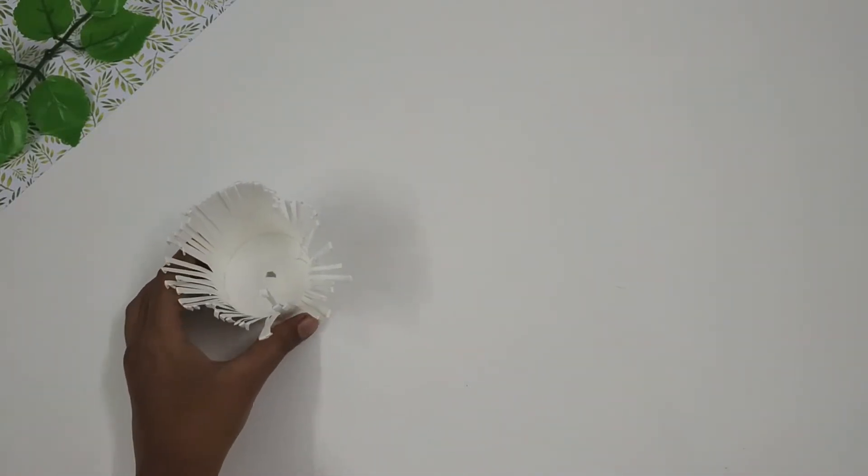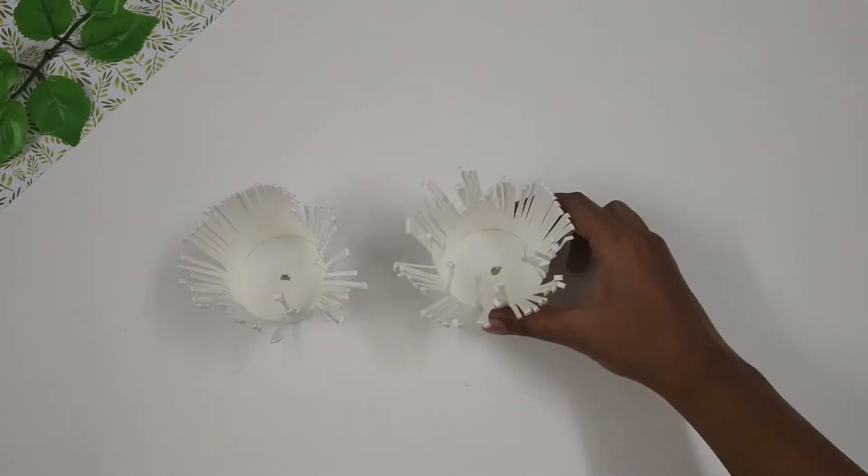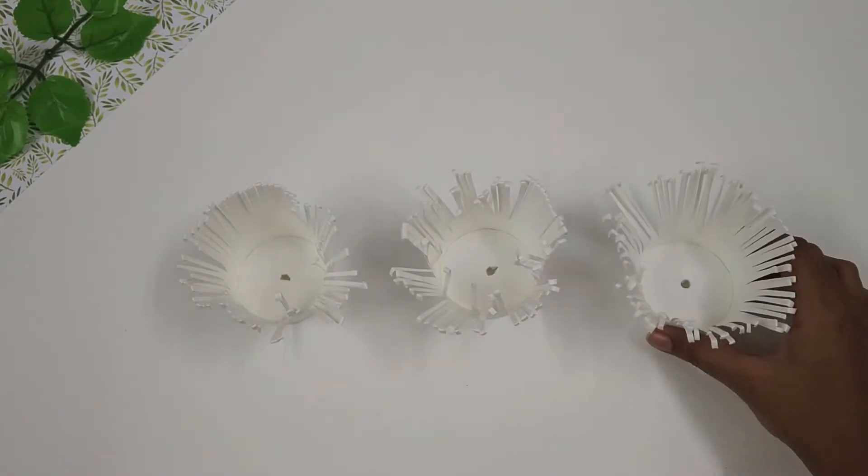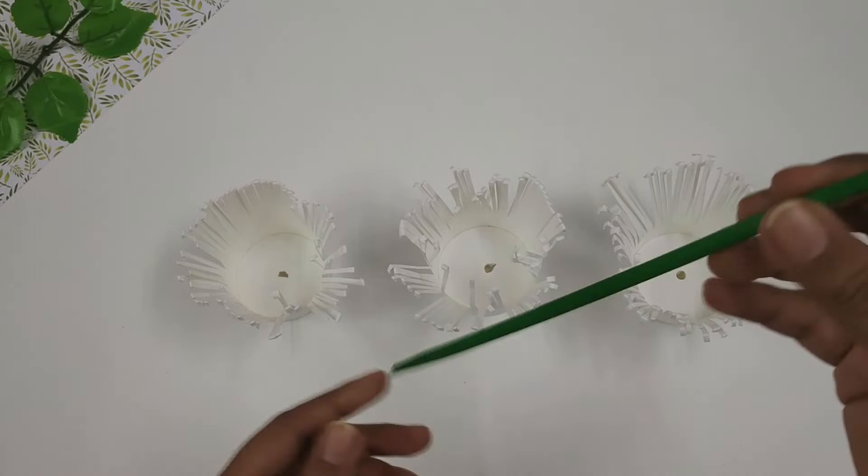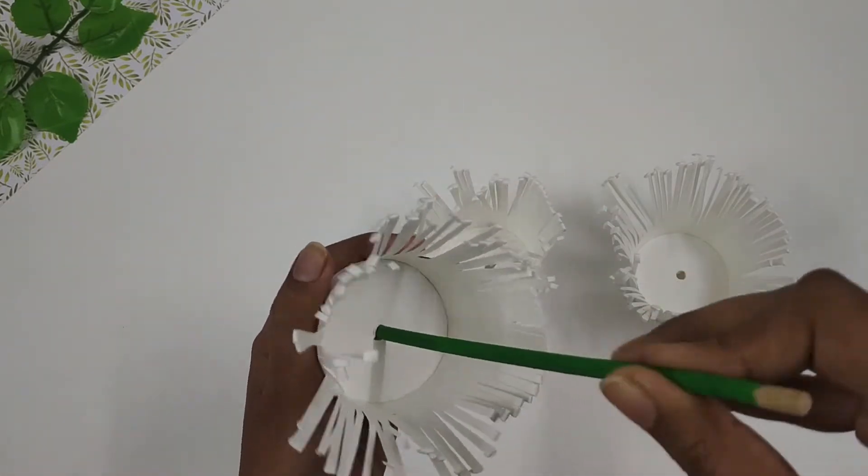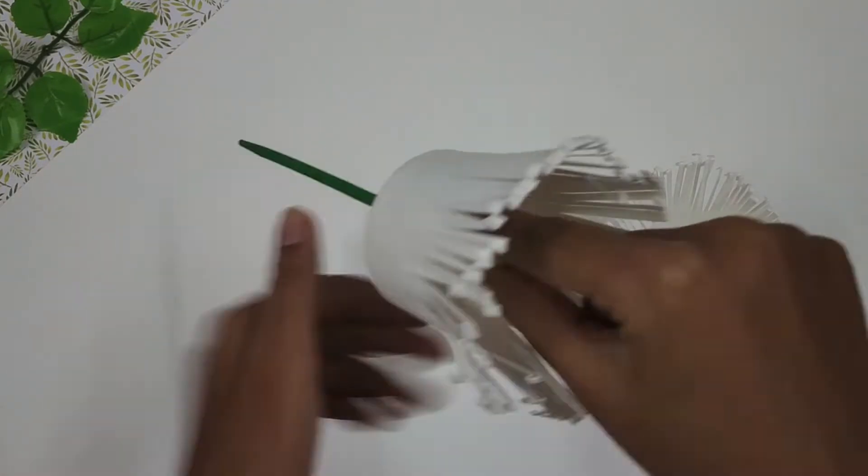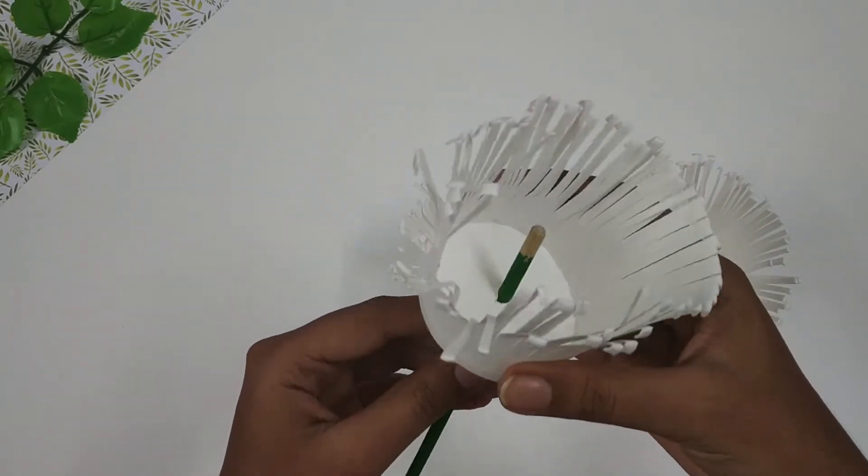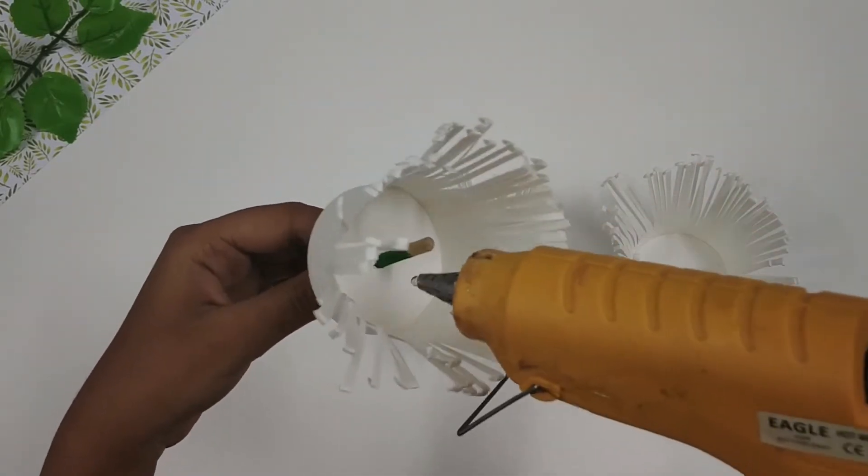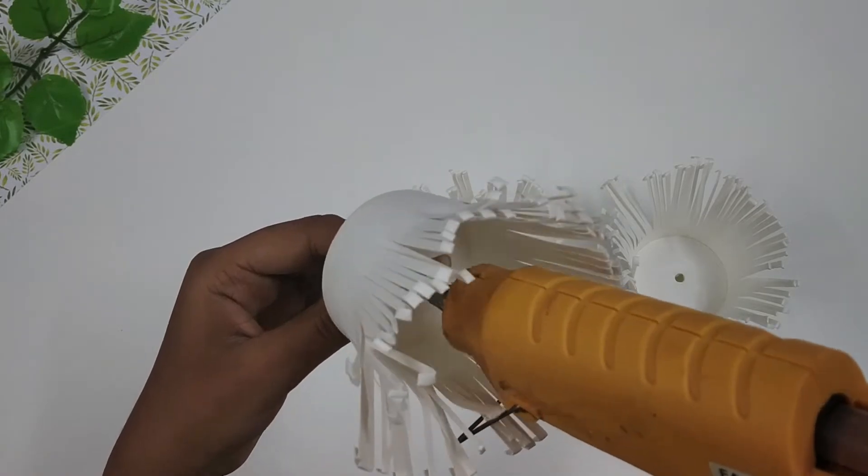Now I'm going to follow the same process and cut out two more cups. Next, I'll take my stem and insert it in the first cup, and I'll apply some hot glue to secure it.